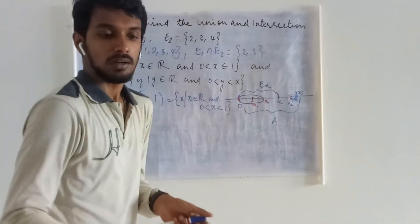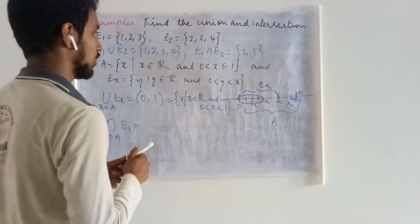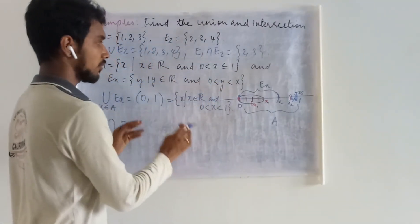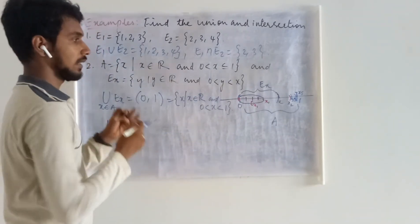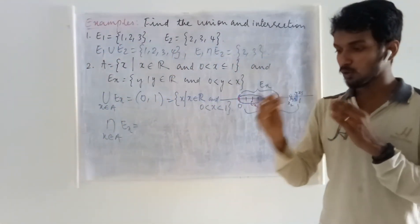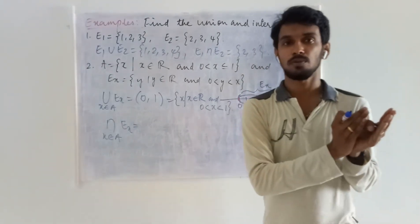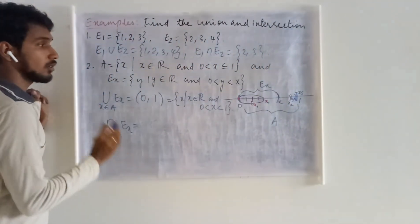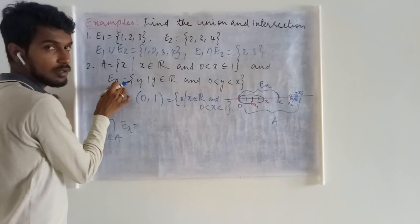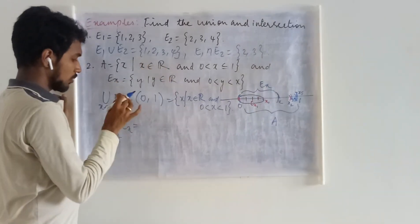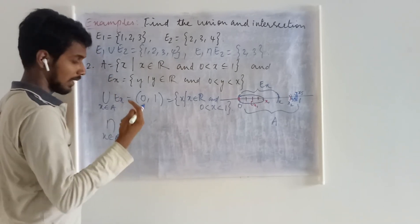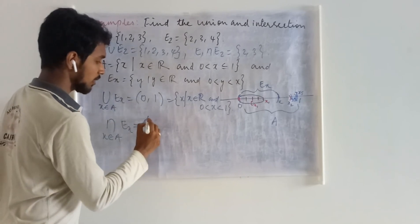You may choose points anywhere, including a point very close to zero — the next point after zero on the real line. In real numbers there is always some point next to zero, even if you cannot name it exactly. If you choose that point as your X, then your set Ex is going to be an empty set. Since one of these infinitely many sets Ex is empty, the intersection of all of them will be empty.